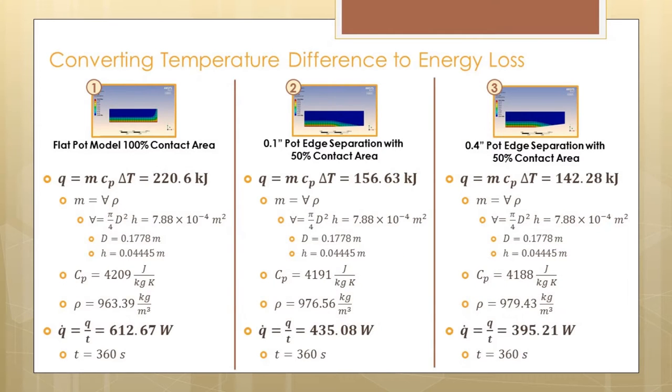Our next step was to take the previous temperatures found and convert them into stored energy. We took the mass of the water, which was the same in all three cases, the delta T from the starting temperature of 23 to the final temperature, and found a specific heat for each average temperature to convert those into energy.